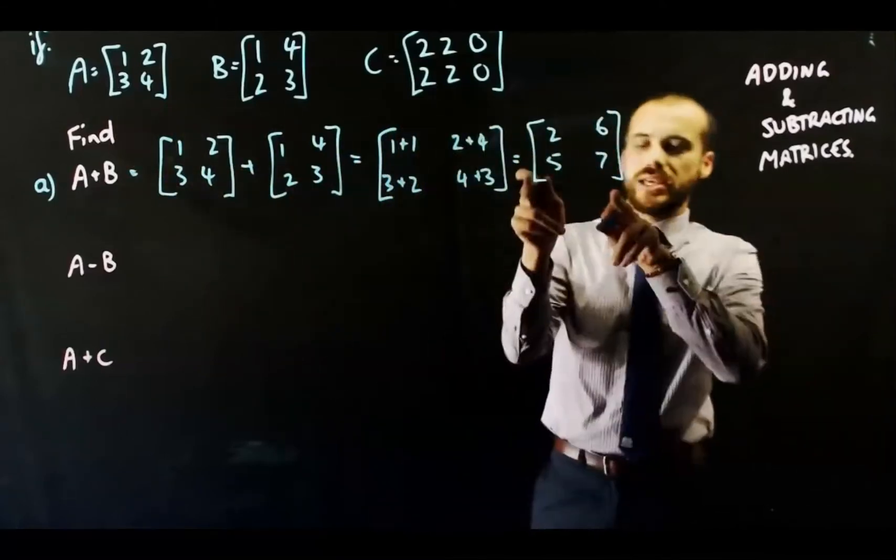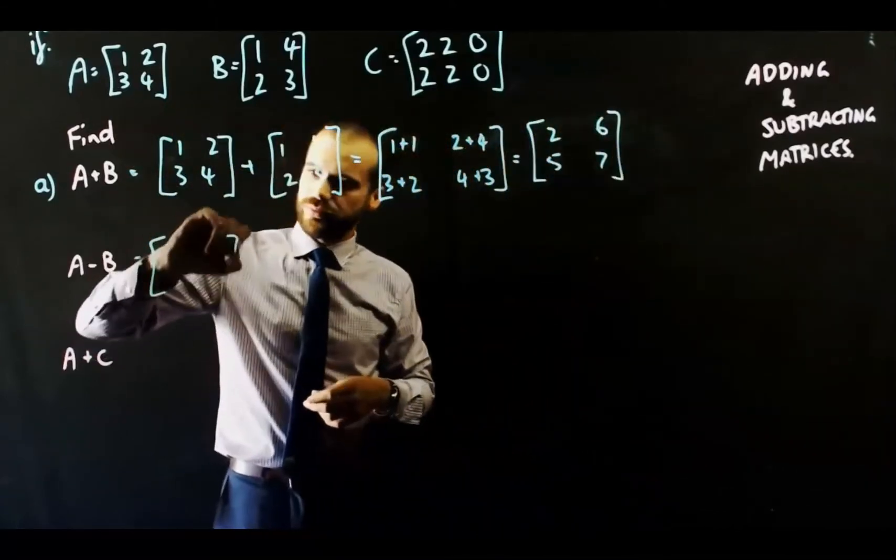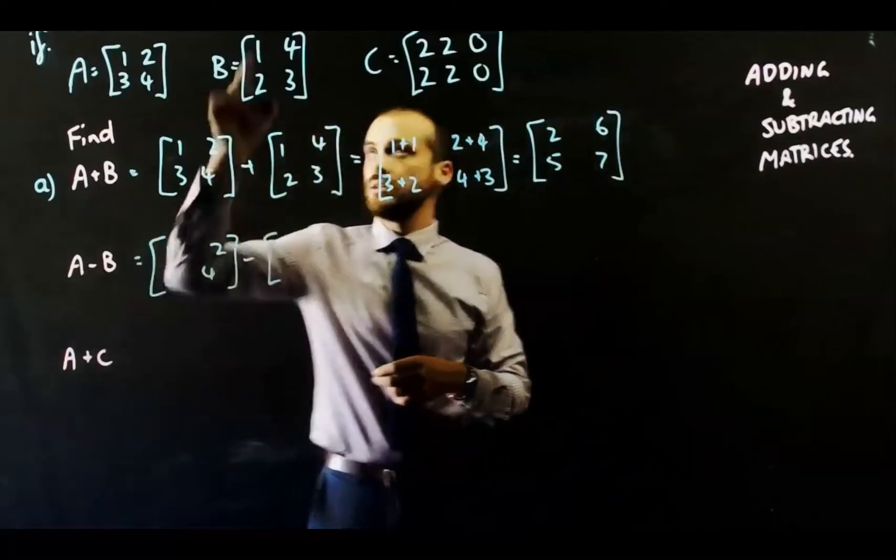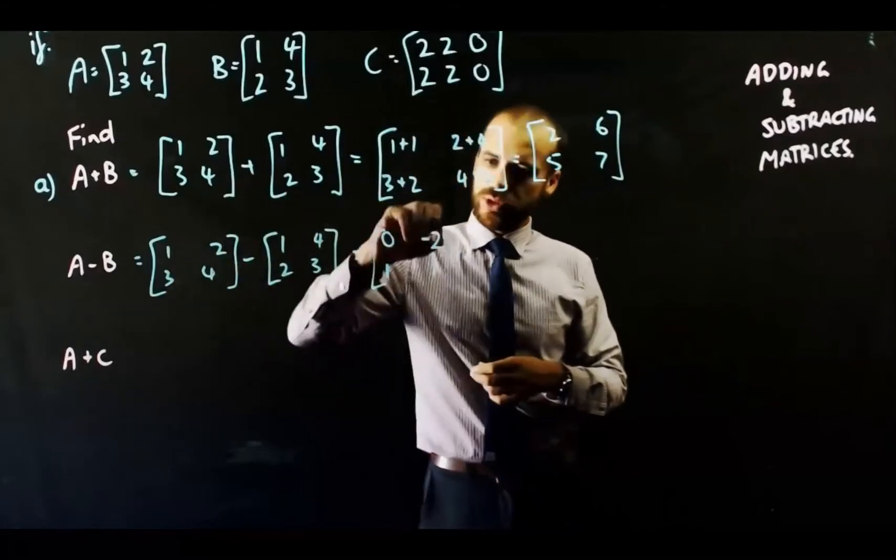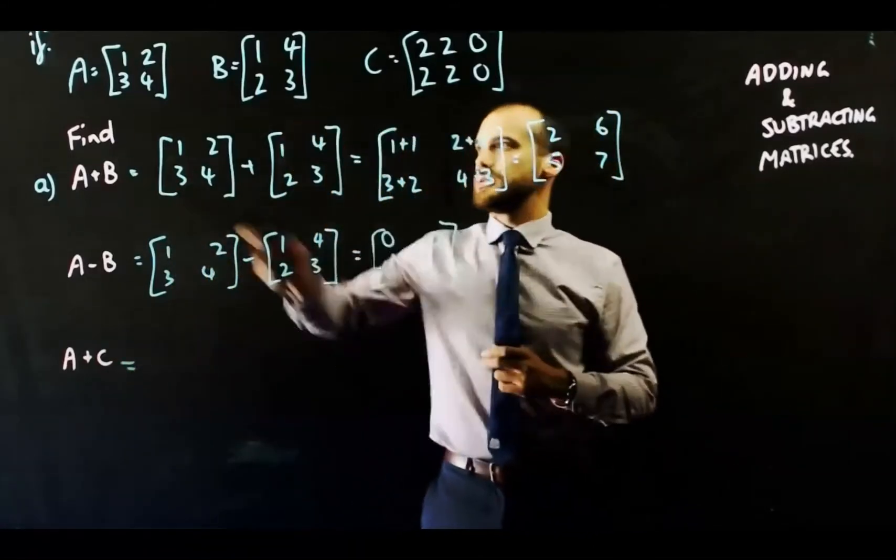Now, if we're going to subtract matrices, A minus B, it's exactly the same. Just when you're subtracting things, if you've got negatives in your matrices, that's going to cause a bit of an issue because you might get like minus minus, but pretty straightforward.